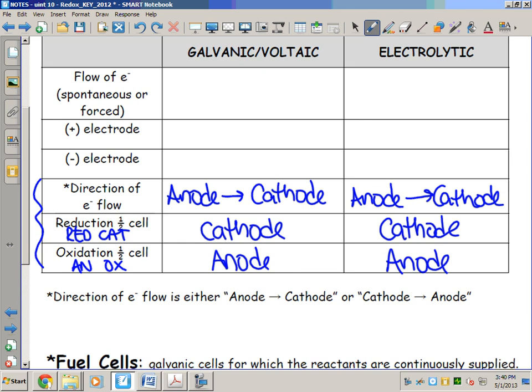Now since we know these three similarities between the two types of cells, it's time to look at the differences. The biggest thing, if the electrons always flowing from the anode to the cathode is the biggest similarity and it explains why the reduction half cell is always the cathode, why the oxidation half cell's always the anode.